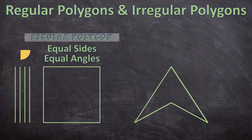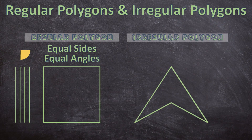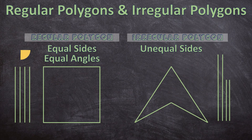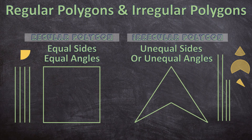Now let's look at the shape on the right. This is an irregular polygon. How can we tell? First, all of its sides are not the same length, so it has unequal sides. Another way to determine if it's an irregular polygon is to look at its angles — they are also not the same. When a shape has either unequal sides or unequal angles, it will be an irregular polygon.